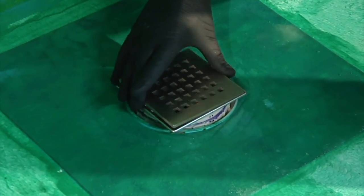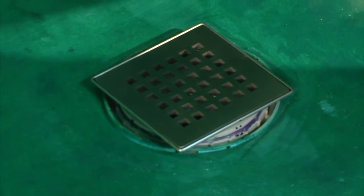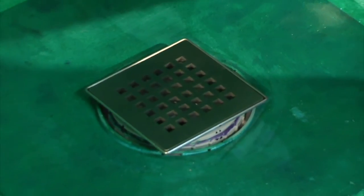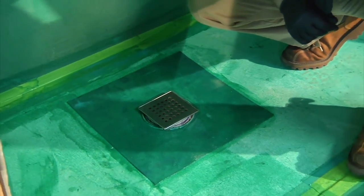After the tile is set, put the drain's stainless steel grate into place. It is a friction fit and must be pressed all the way in. Now your shower pan installation is complete and you're on your way to a barrier-free shower.